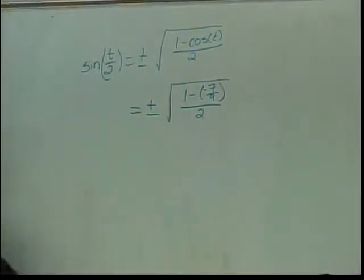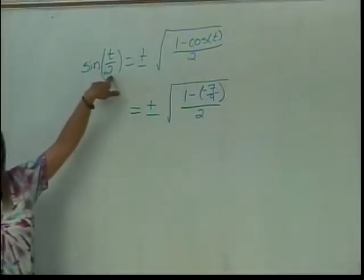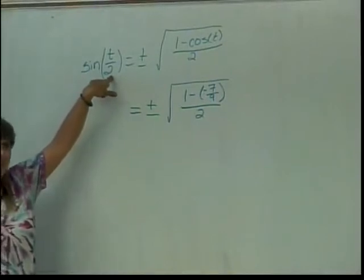T is in quadrant 3, but it's not the angle T that I care about. It's the angle T over 2 that I need to know where it is.